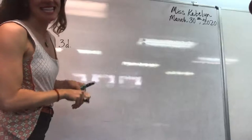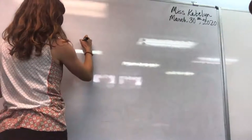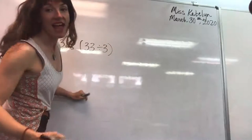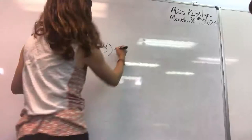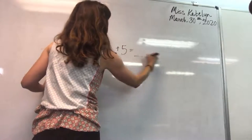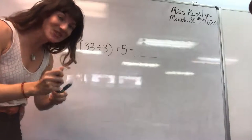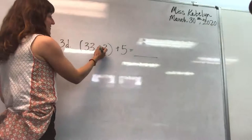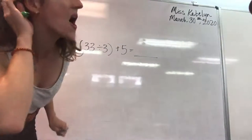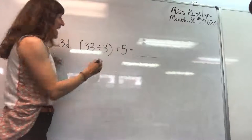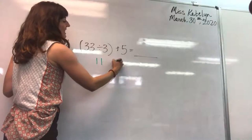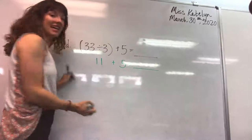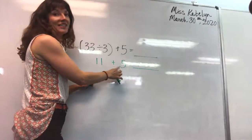All right. So here's three D. It looks like this. 33 divided by three inside parentheses. And then you add five. Okay. So this is how you do all the others. You please do what is inside the parentheses first.